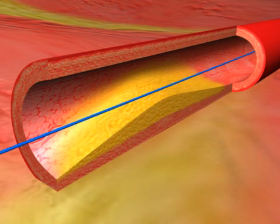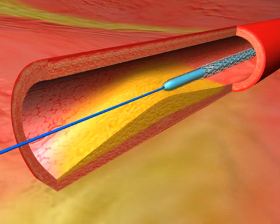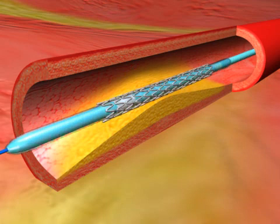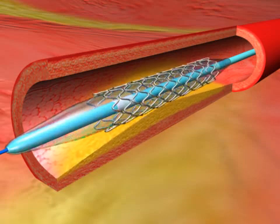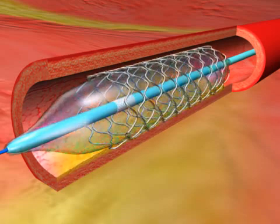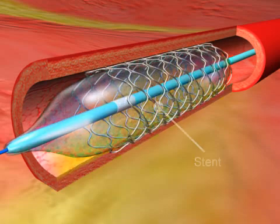Sometimes the physician can decide to place a small tube called a stent inside the reopened artery to hold it open. The stent is passed along to the tip of the catheter and then opened up. The balloon catheter, guide wire, and guide catheter are then removed.